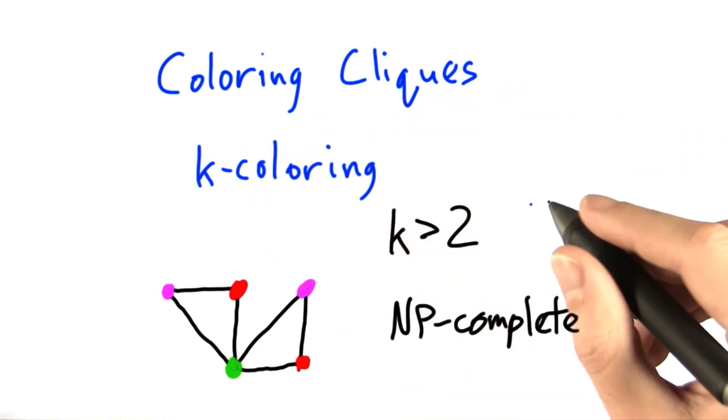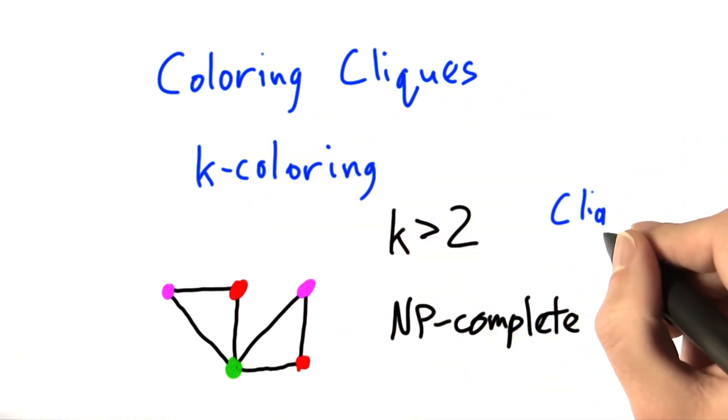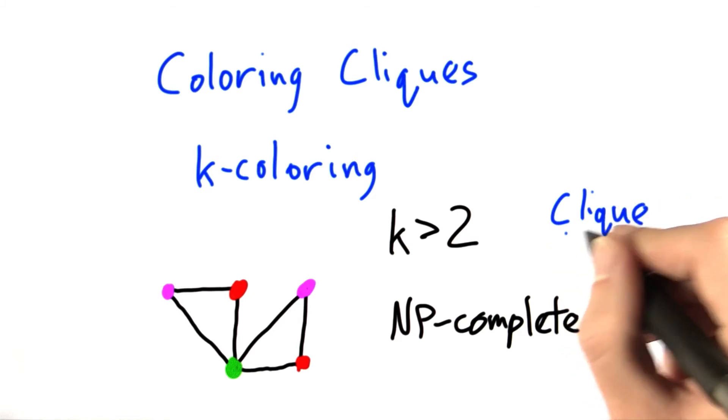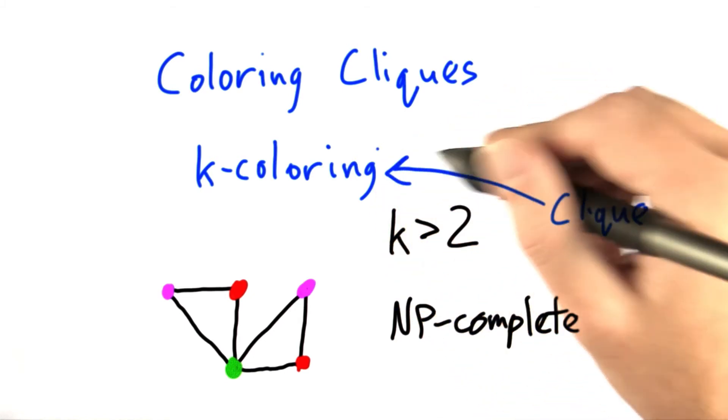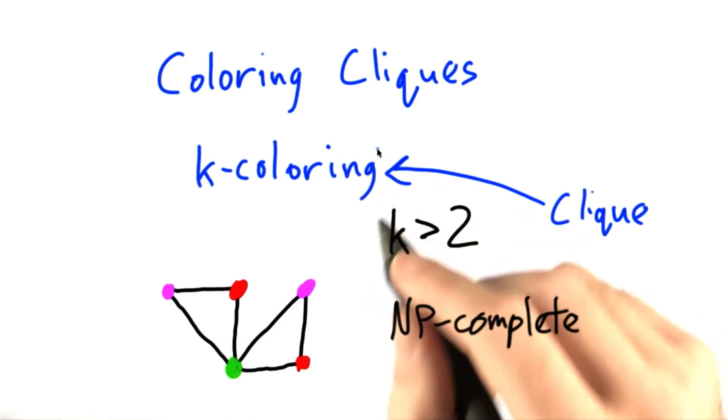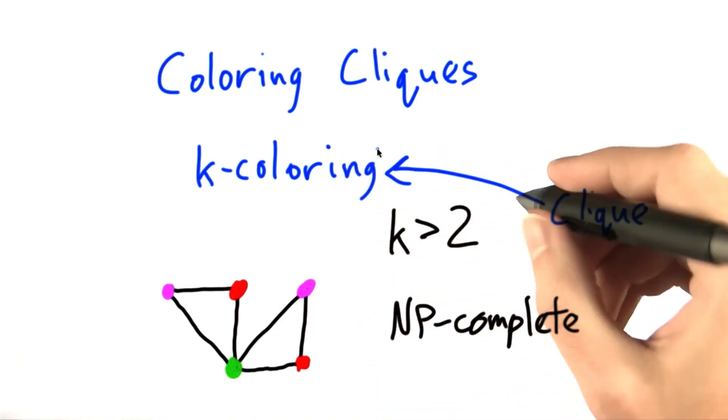Now, in order to show that k-coloring is NP-complete, what we can do is simply reduce clique to k-coloring. And there are two basic facts that help us to do this.